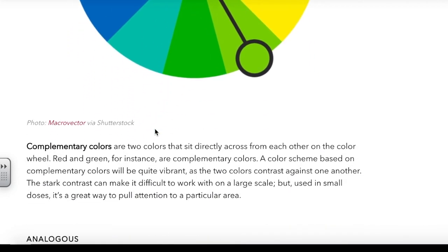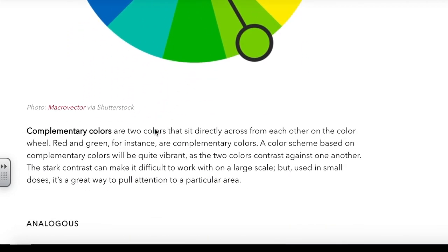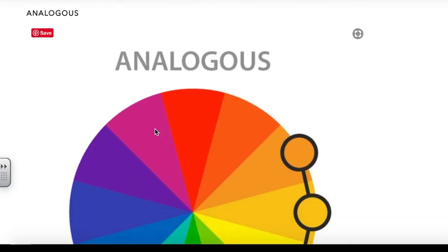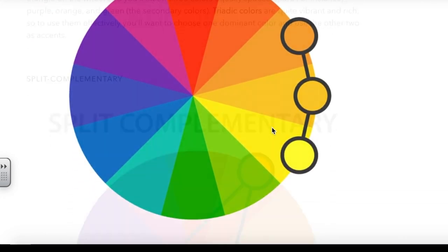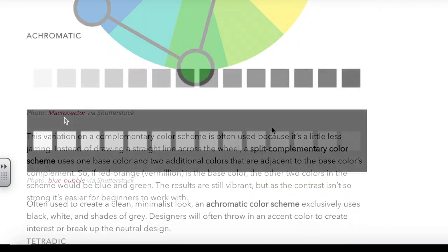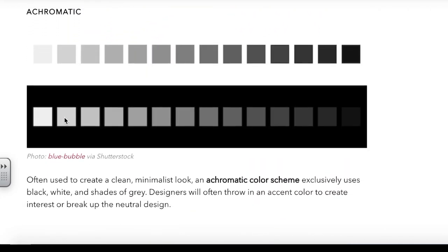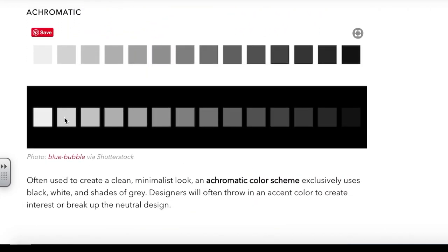Complementary color schemes go straight across the color wheel. Analogous color schemes are color neighbors — the colors that touch, a few colors that touch. Achromatic means there's no color at all: black, whites, and grays.